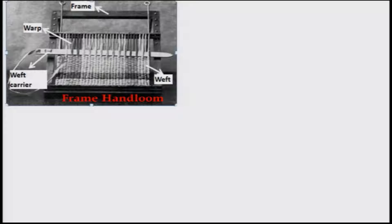There is another type called a frame hand loom, which is very easy and uses the same principle. It has warps and weft carriers going left to right and right to left. Something changes the warp orientation so threads move one over another. It operates on the same principle but is a hand one — a very simple design you can even make at home.